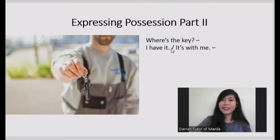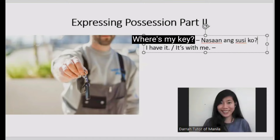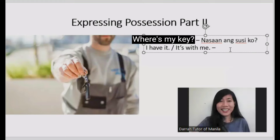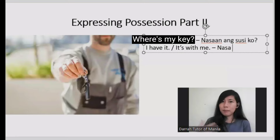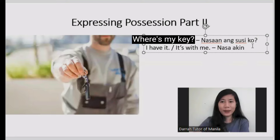For example: Where's my key? In Tagalog, 'I have it' will be equal to 'it's with me.' Where's my key — nasaan? The key of mine — key is susi. Nasaan ang susi ko? The answer to this question should contain the word nasa. Nasa, and me is akin. Nasa akin. This is how we say 'I have it' or 'it's with me' in Tagalog.